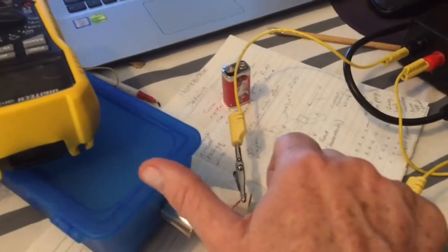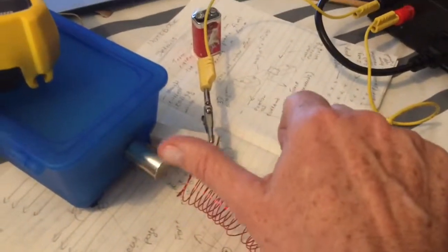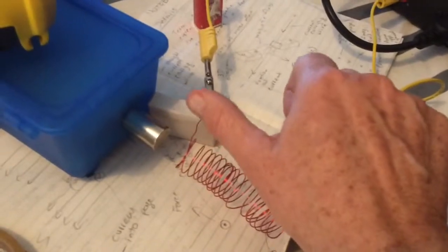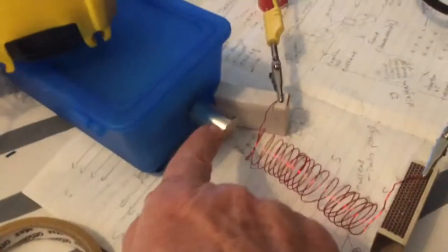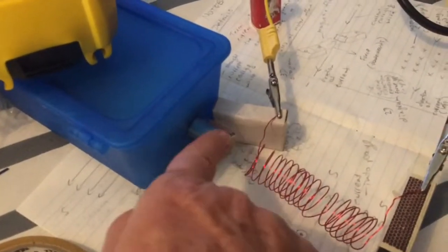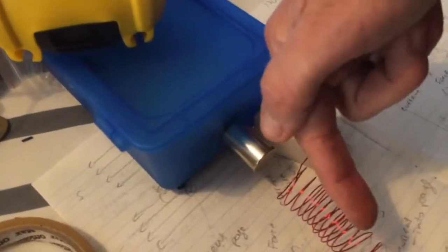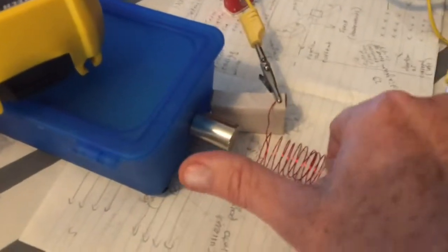my thumb points in the direction of the north pole through the solenoid. Now the magnet here also has a north pole coming out in this direction, so if I turn on the current, these should repel each other.